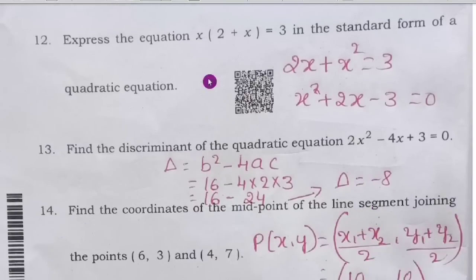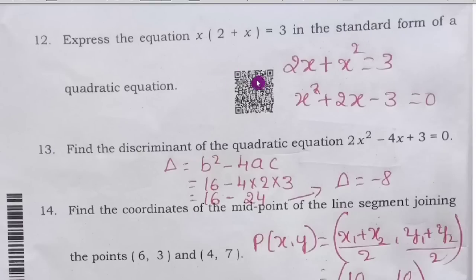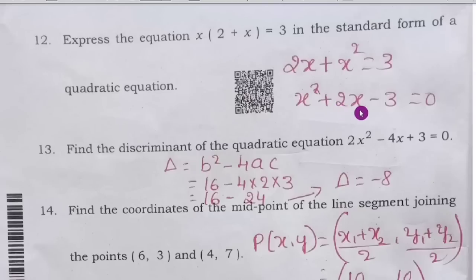Twelfth question: express x(2 + x) = 3 in the standard form of a quadratic equation. That means 2x + x² = 3. Therefore, x² + 2x − 3 = 0. This is the standard form.